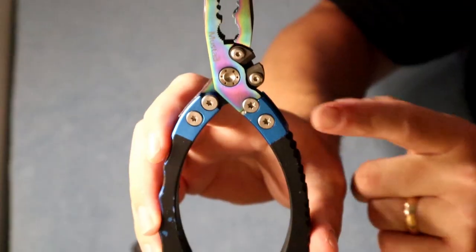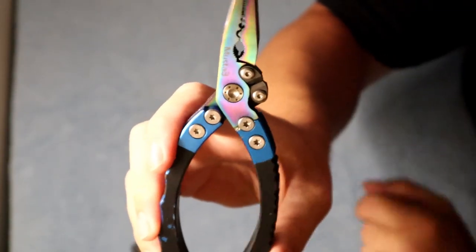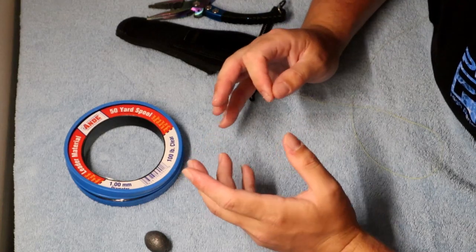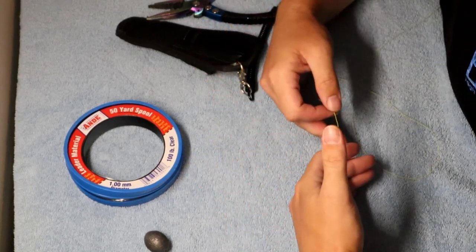And you need a pair of pliers mainly because it has that little snipping tool on it. Now guys, there's gonna be different ways you can tie grouper rigs; this is just the way that I do it.